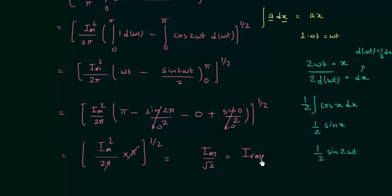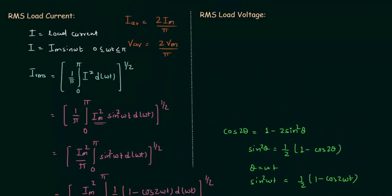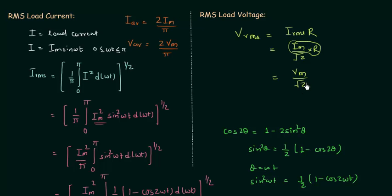This is the value of IRMS, the root mean square value of the load current. Note that this RMS load current is the same for both the bridge rectifier and center-tap rectifier. For RMS load voltage, VRMS equals IRMS multiplied by R, where R is the load resistance. Since IRMS equals Im/√2, and Im times R equals Vm, we have VRMS equals Vm/√2. In the next lecture I will calculate the form factor and ripple factor for the full wave rectifier.